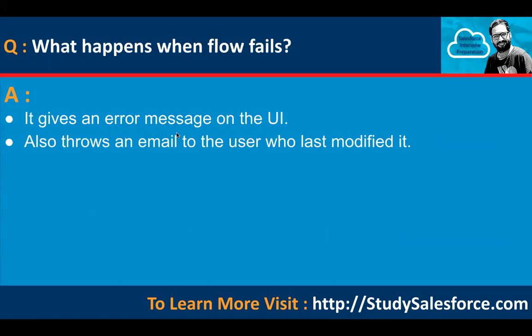What happens when a flow fails? It gives an error message on the UI and also throws an email to the user who last modified it.